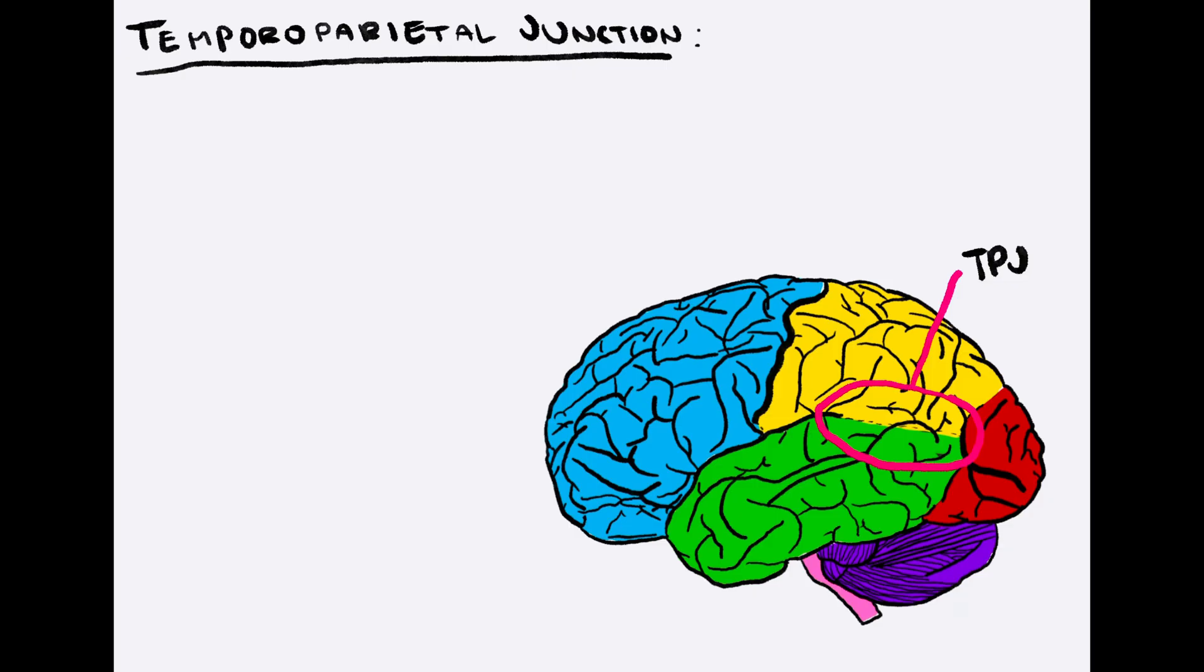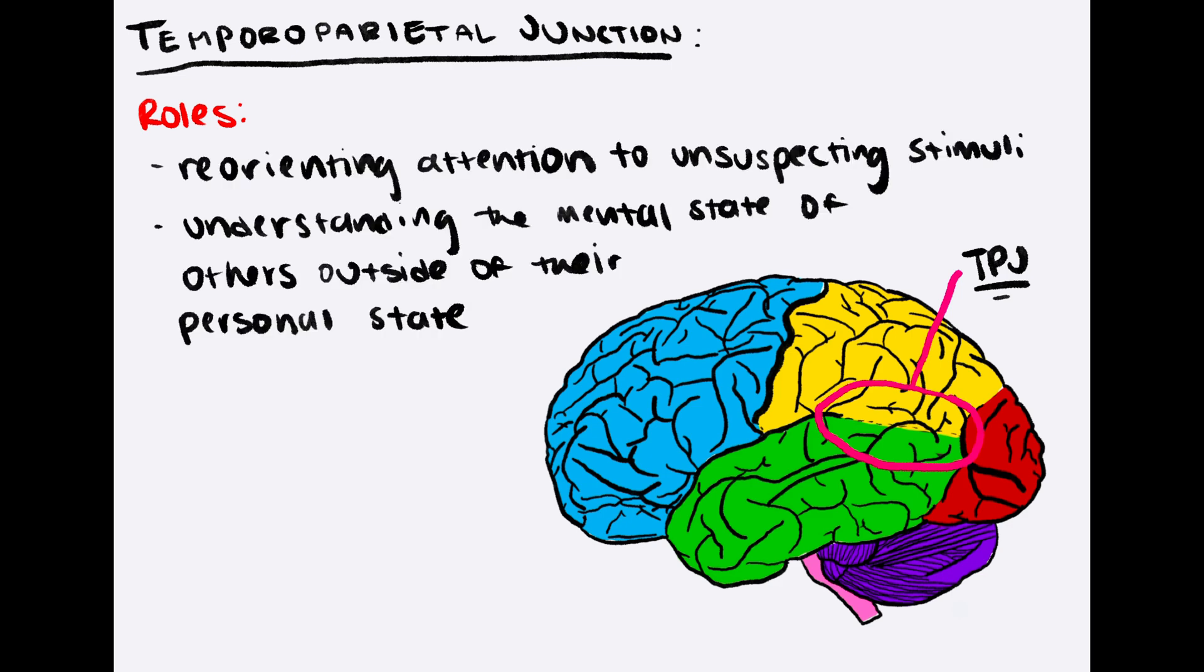Another social brain region is the temporoparietal junction, often abbreviated to TPJ. The TPJ has roles in reorienting attention to unsuspecting stimuli and understanding the mental state of others outside of their personal state, also known as theory of mind.